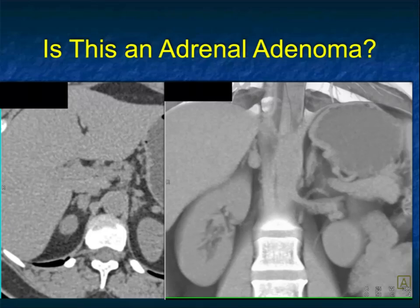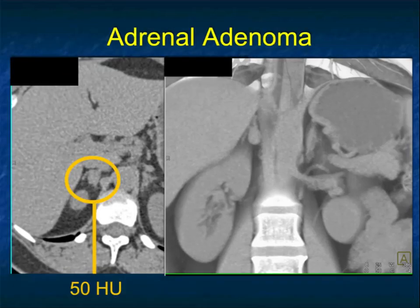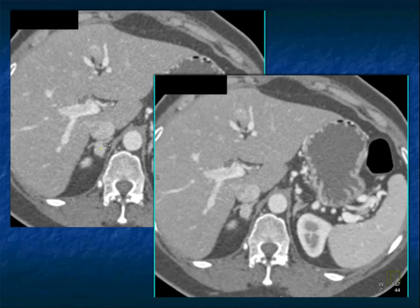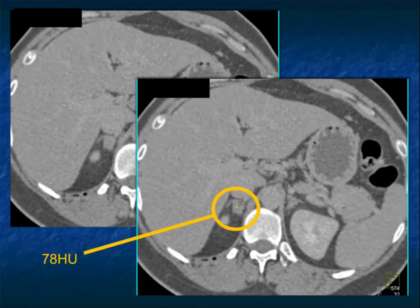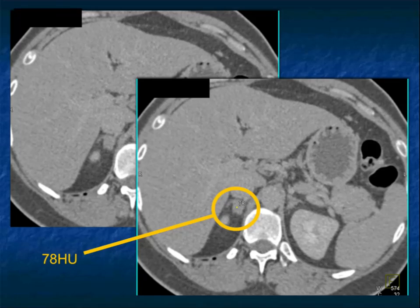In this first case, there is an incidental right adrenal lesion that looks like a sonometer. In my mind it's going to be an adenoma, but it's soft tissue density measuring 50 HU - so you can't call it an adenoma. When contrast is given, the lesion enhances to about 164 Hounsfield units. The lesion washes out to 78 HU, which means it washes out more than 60% - so based on washout you might say it's an adenoma.